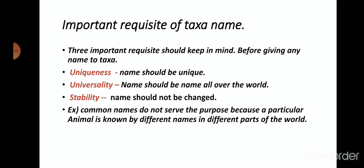Universality means the name given to the organism can be used all over the world and does not show differences in naming pattern across different regions. Wherever we go and whatever organism we see, it has a proper name that is universal. The third requisite is stability — the name should not be changed. Whatever name is given to an organism does not change from place to place or region to region.